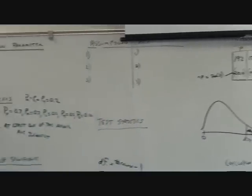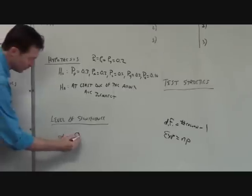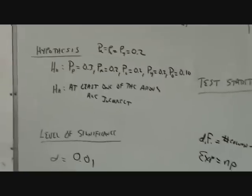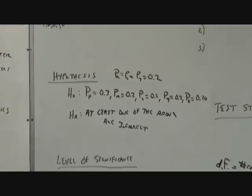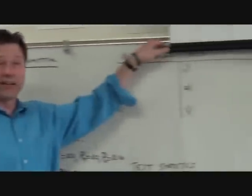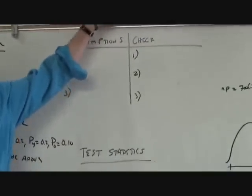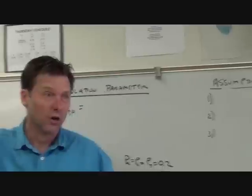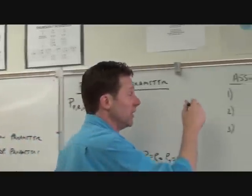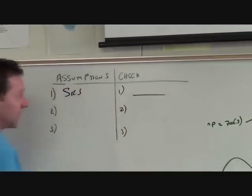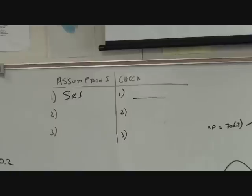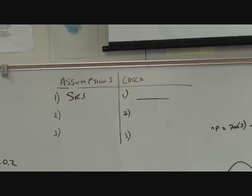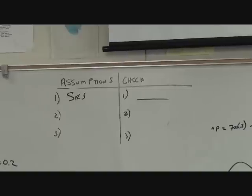Level of significance: I'm taking on a corporation, so I don't want to make a type 1 error. I'm going 1% — I'm going to be darn sure if I'm going to publicly call that corporation a liar. Our assumptions are a little different for a chi-squared test. First: we want to make sure we got a good simple random sample of Skittles — that was always the hardest part for students doing their experiments.